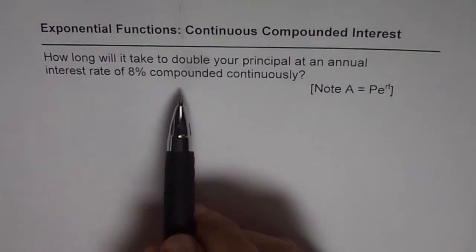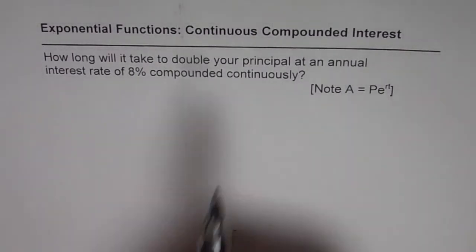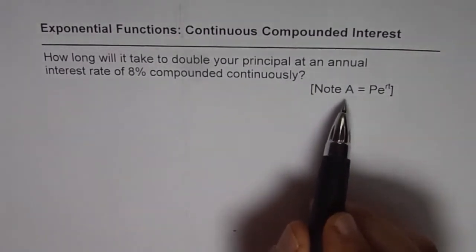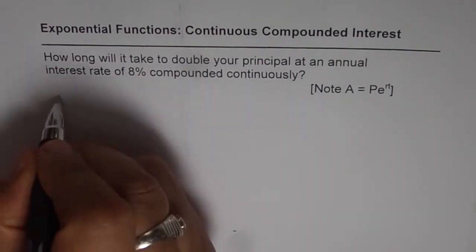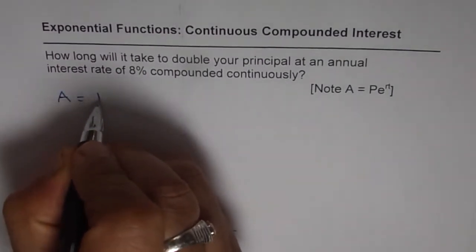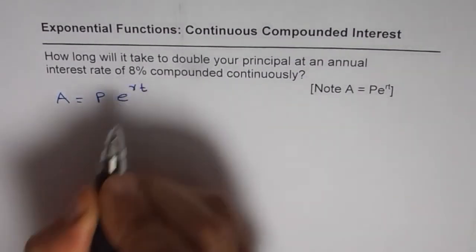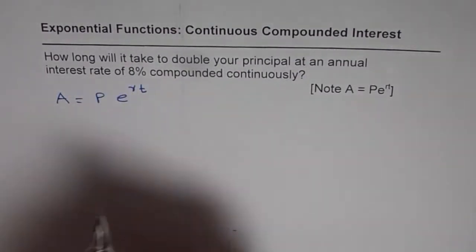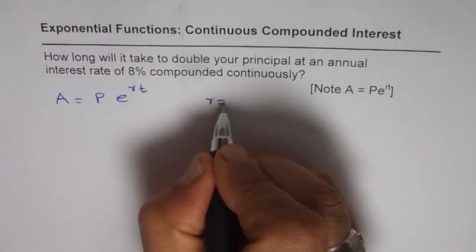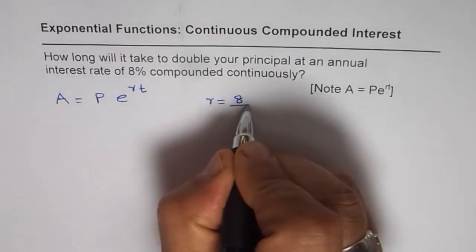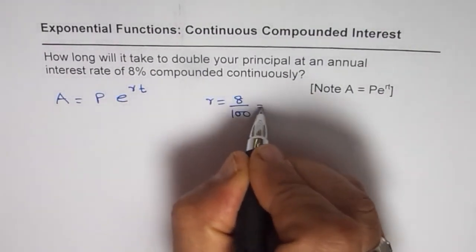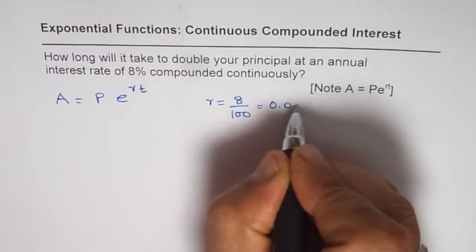When we are talking about compounded continuously, the formula for finding the amount is A equals principal amount times e to the power of Rt, where R is the rate of interest. It is given to us as 8%, so 8% means 8 over 100 which could be written as 0.08.